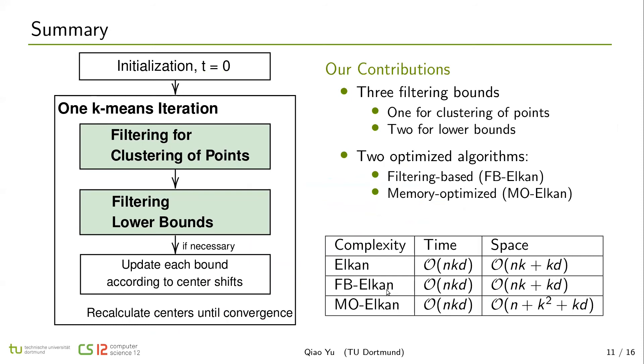In summary, we added three filtering bounds in Elkan k-means. FB-Elkan is targeted to reduce more distance calculations than Elkan, and MO-Elkan is to save less bounds than Elkan. And here is the comparison of these three methods. In the worst case, they are in the same time complexity. However, FB-Elkan can avoid more distance calculations in three of them. So in fact, the average time complexity of FB-Elkan is less than others. And for space complexity, MO-Elkan reduces nk to n by adding complexity of k^2.